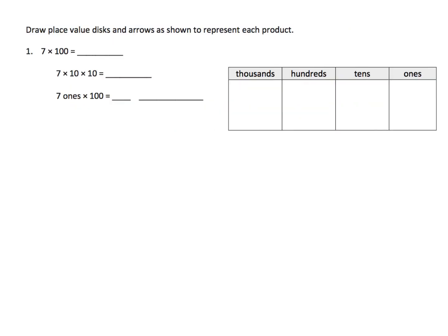We're going to start by drawing place value disks and arrows, as shown in the example, to represent each product. The idea is we're going to start with seven. So what does seven look like? Seven looks like this — seven ones in our place value chart.